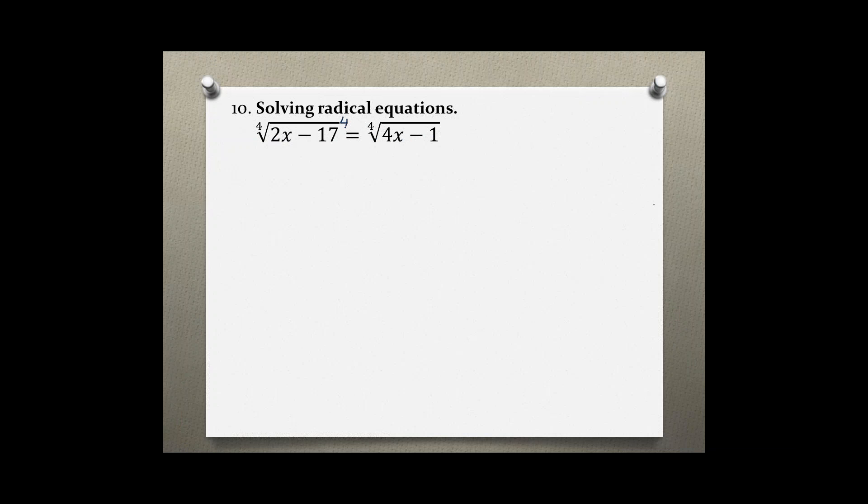We're using the property of raising each side to the power of 4. This would cancel out the 4th root and we can bring down the radicands. So 2x minus 17 is equal to 4x minus 1.